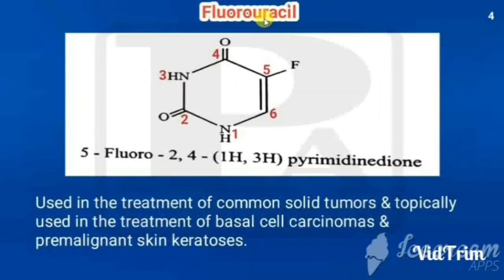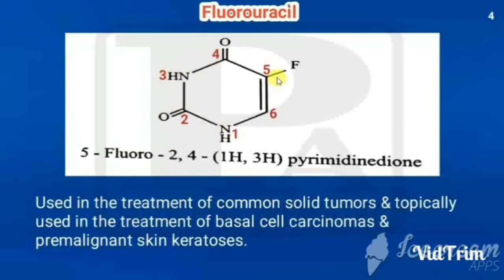The next drug is fluorouracil, or 5-fluorouracil, which comes under pyrimidine antagonists. It has a pyrimidine nucleus with ketones at positions 2 and 4, so it ends in dione. Fluorine is at the fifth position. The first and third nitrogens have hydrogens attached, so they are designated 1H and 3H. The full IUPAC name is 5-fluoro-2,4(1H,3H)-pyrimidinedione.